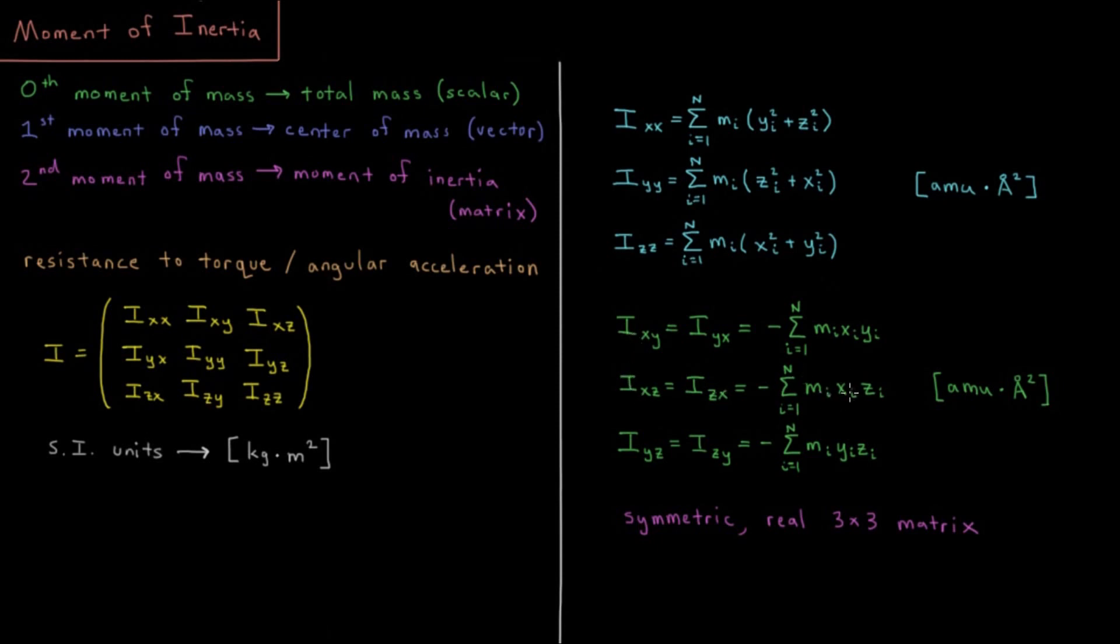And the corresponding values hold for xz and for yz as well. So that gives us a symmetric real 3x3 matrix for our moment of inertia tensor overall.